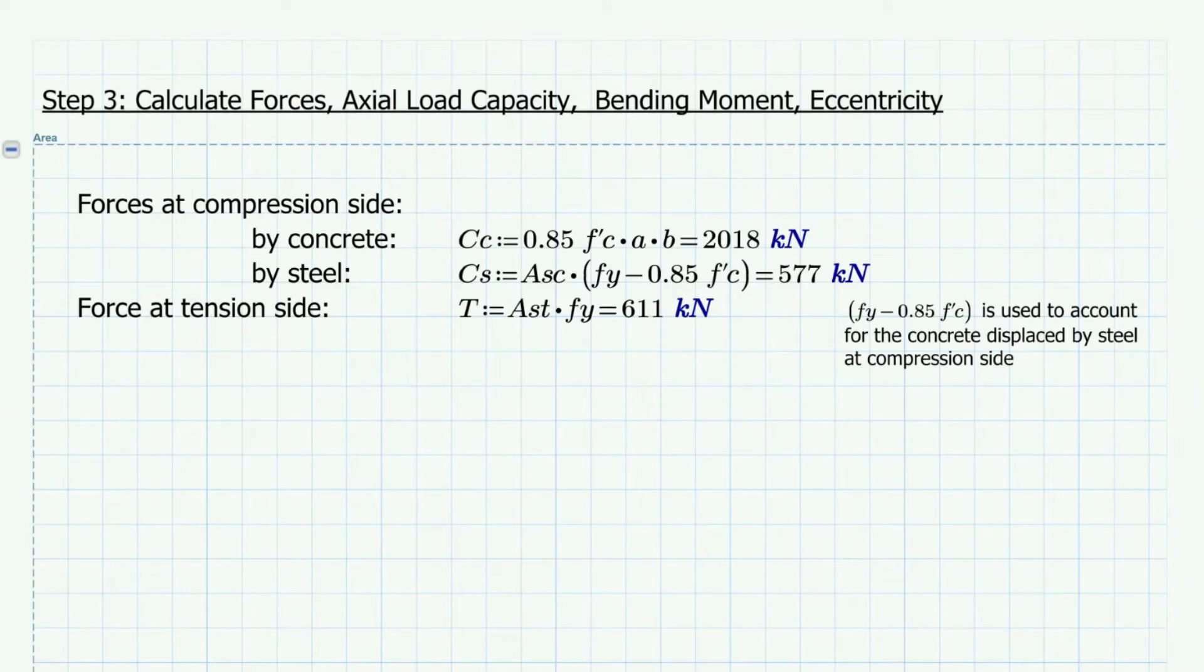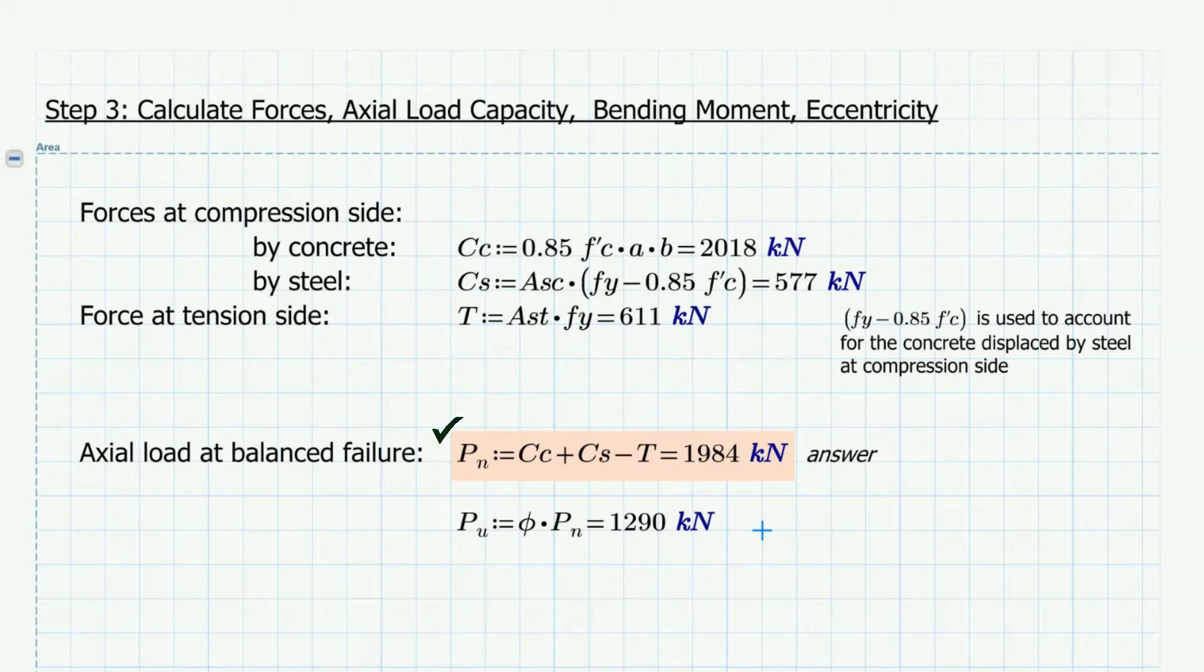The next step is to calculate the forces and the axial load capacity, bending moment, and the eccentricity at balanced failure. The forces at compression side are given by these formulas. Note that the steel force at compression side, we use Fy minus 0.85 F'c to account for the concrete displaced by steel at compression side. We are using Fy since we are calculating based on the condition that steel yields same time with concrete. So the nominal axial strength at balanced failure is equal to the sum of all forces, which gives the value of 1984 kN.